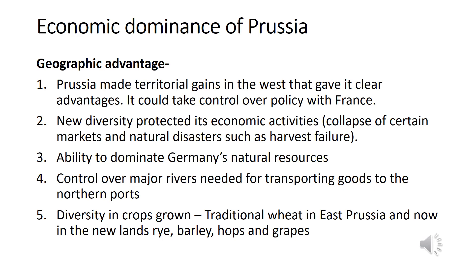We're now going to discuss why Prussia was able to achieve economic dominance, which mainly comes down to geographical advantages. First, Prussia had made large territorial gains in the West, including land bordering France, allowing it to take the lead role in trade negotiations with France and opening up its production market to a much bigger area. Second, it had economic diversity that protected its activities — collapse of certain markets or natural disasters such as harvest failure were less catastrophic because Prussia had both industry and agriculture to fall back on.